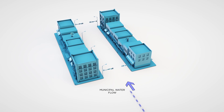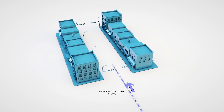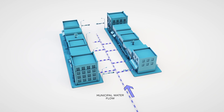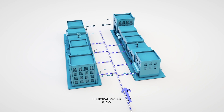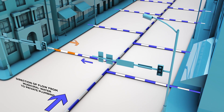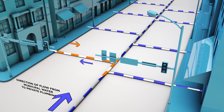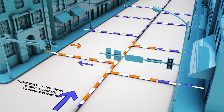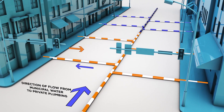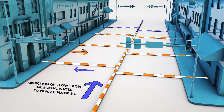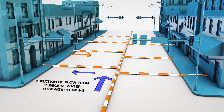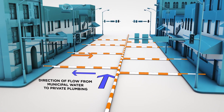Water normally flows in one direction from the municipal water system through the cold or hot water plumbing. If the water begins to flow in the opposite direction due to back pressure or back siphonage, without the proper backflow prevention devices in place, it can become contaminated from cross connections.